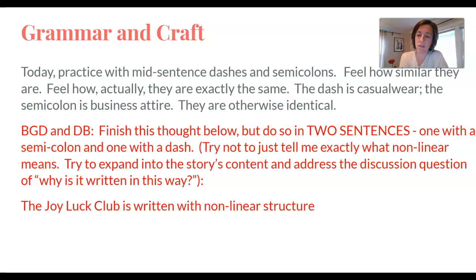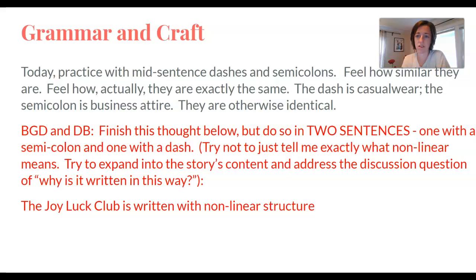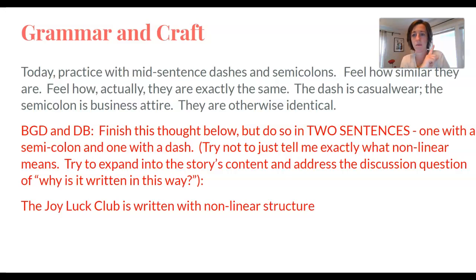Okay, so your assignment. We're going to practice with mid-sentence dashes and semicolons and feel how similar they are — how they're actually the same. Here is your task: finish the thought below in two sentences, one with a semicolon and one with a dash. Try not to just tell me what non-linear means; try to expand into the story's content and address the discussion question of why it is written this way. Give me real substance in that sentence, which will also be useful pre-writing for your organization assignment. Your first sentence should start with: The Joy Luck Club is written with non-linear structure. Complete that sentence using a semicolon or dash, then add a second sentence using whichever one you hadn't used yet. So two sentences — one with a semicolon, one with a dash — and put that in your BGD and on the discussion board as well.